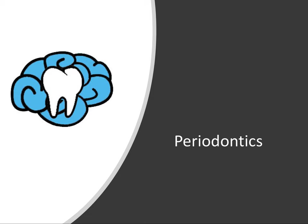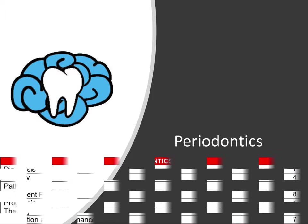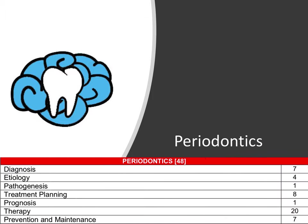Hey everyone, Ryan here, and welcome back to our periodontic series. Here's a reminder of all the categories that the board exam tests in periodontics. So far we've covered diagnosis of periodontal disease including different classifications for things like furcation involvement and gingival recession, and we also talked extensively about etiology like plaque and other local factors. This video will cover the high-yield information for the periodontal disease process, focusing on what you need to know for the board exam.